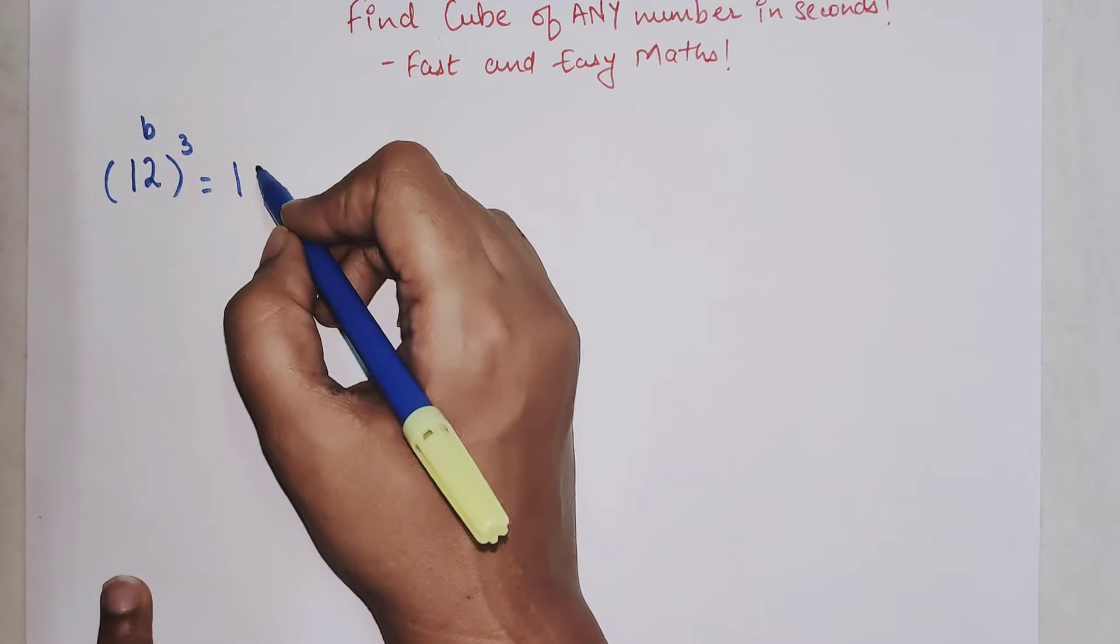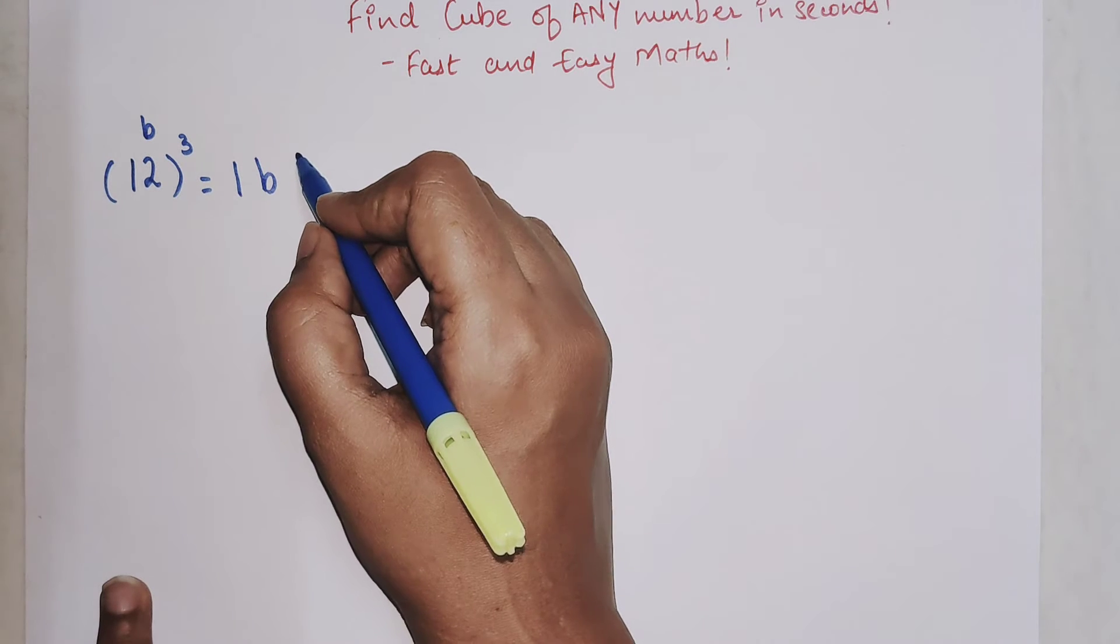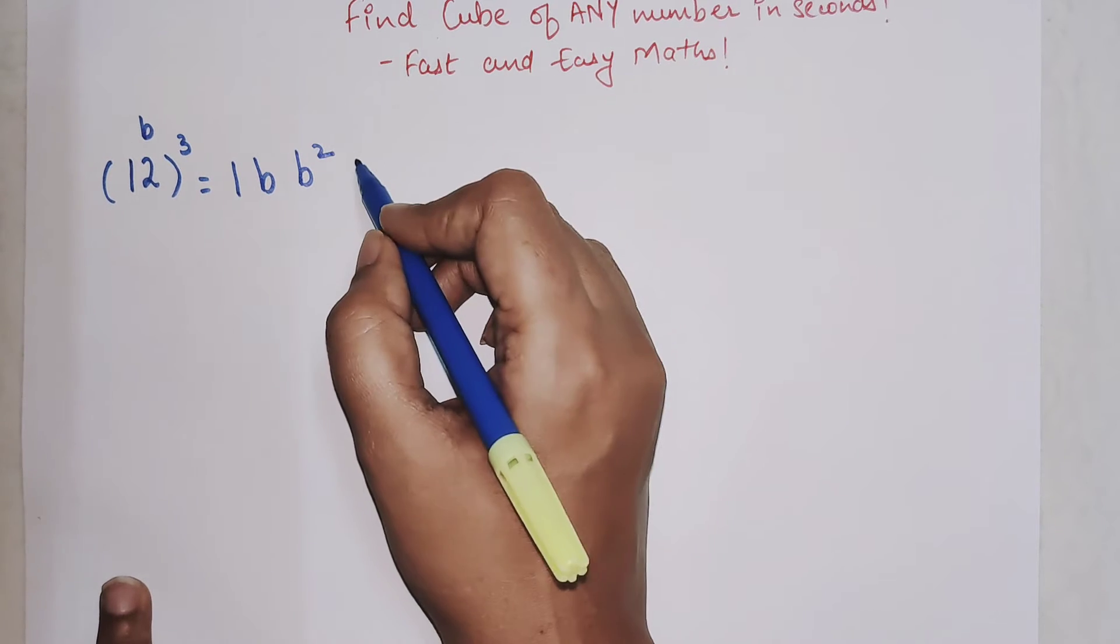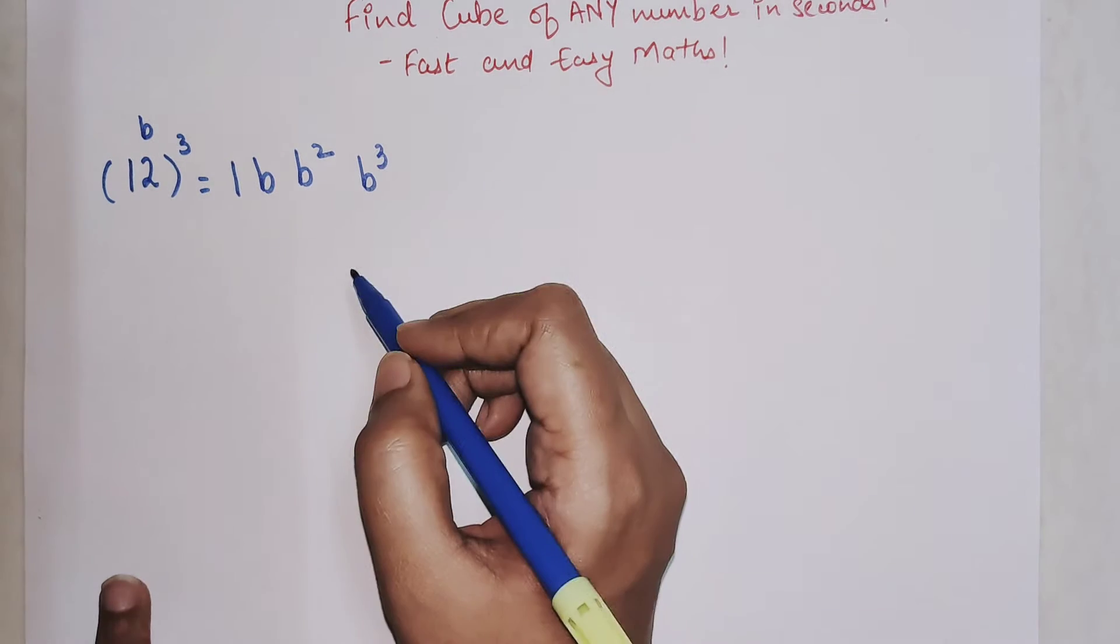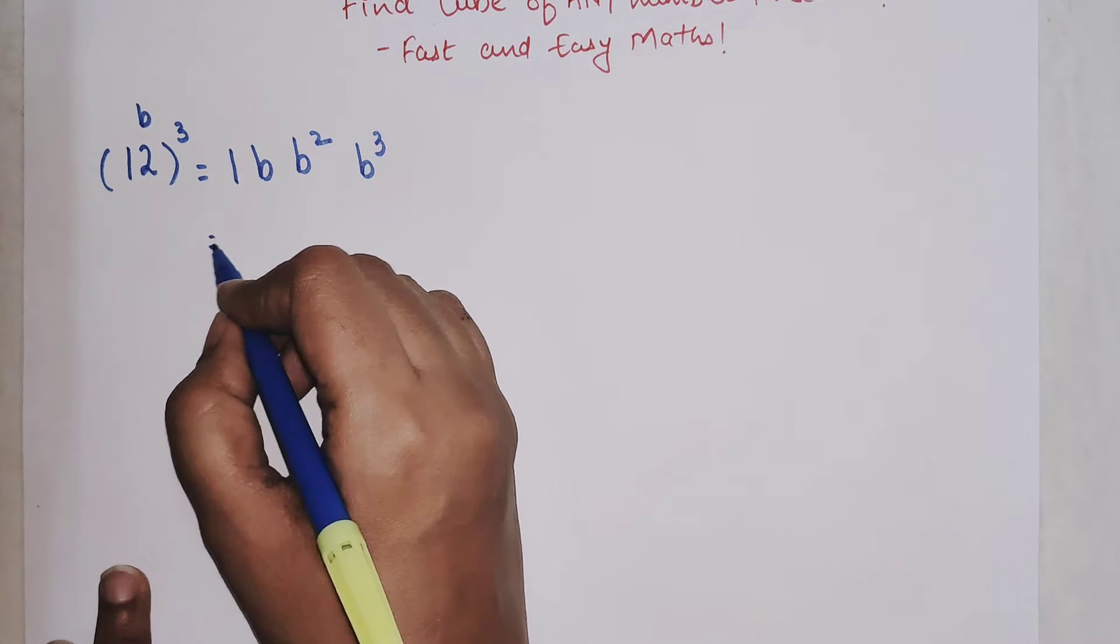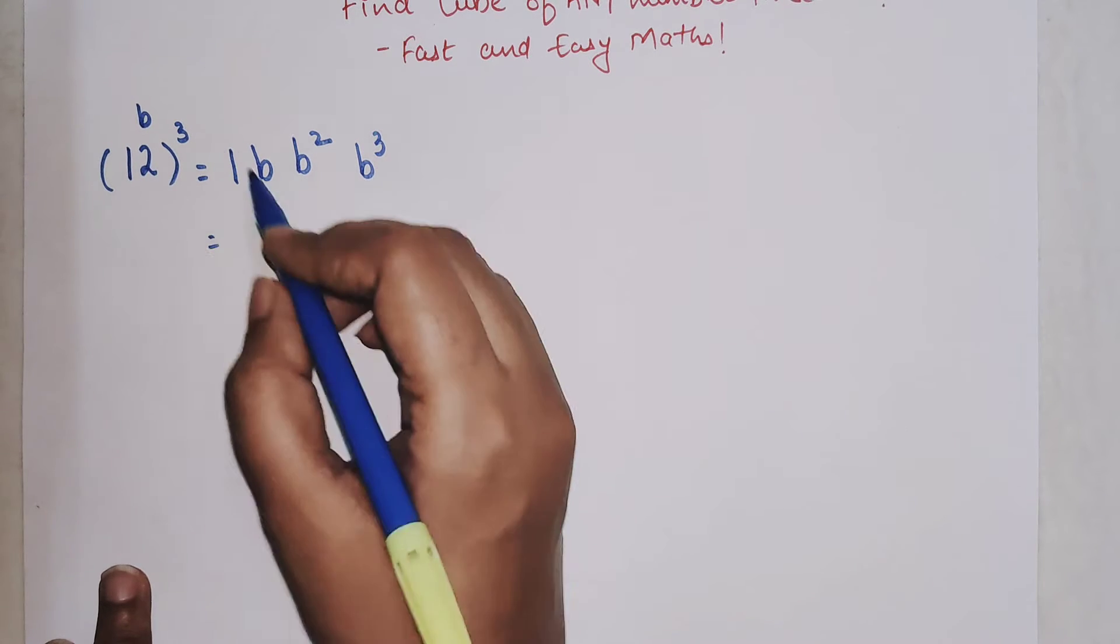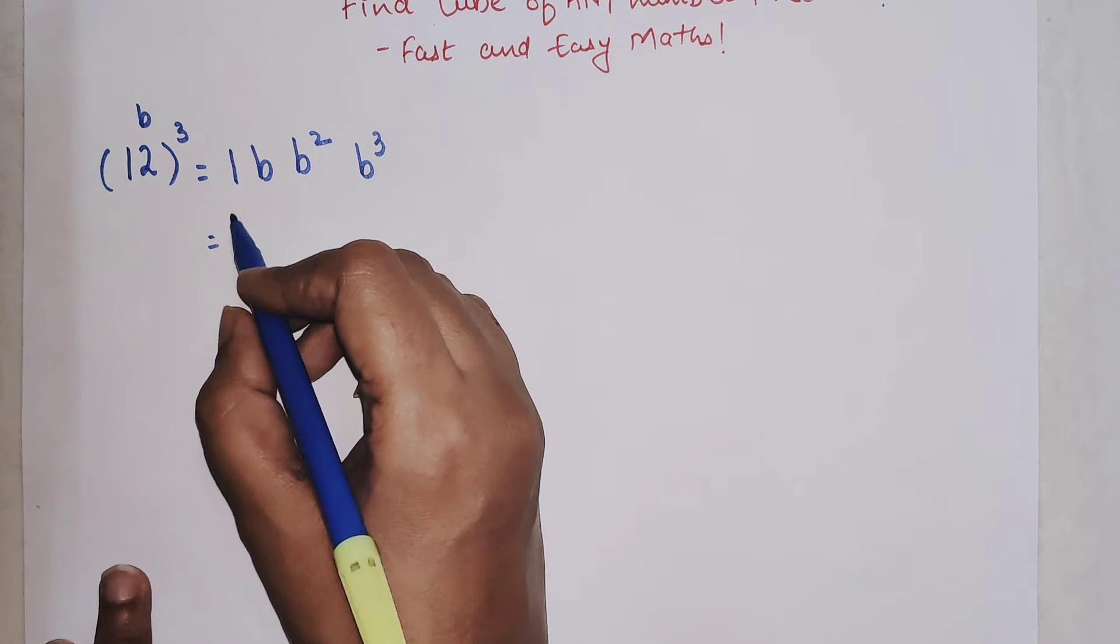So two, two square will be four, and two cube will be eight. And after this there is just one small step where you have to double these two middle numbers.